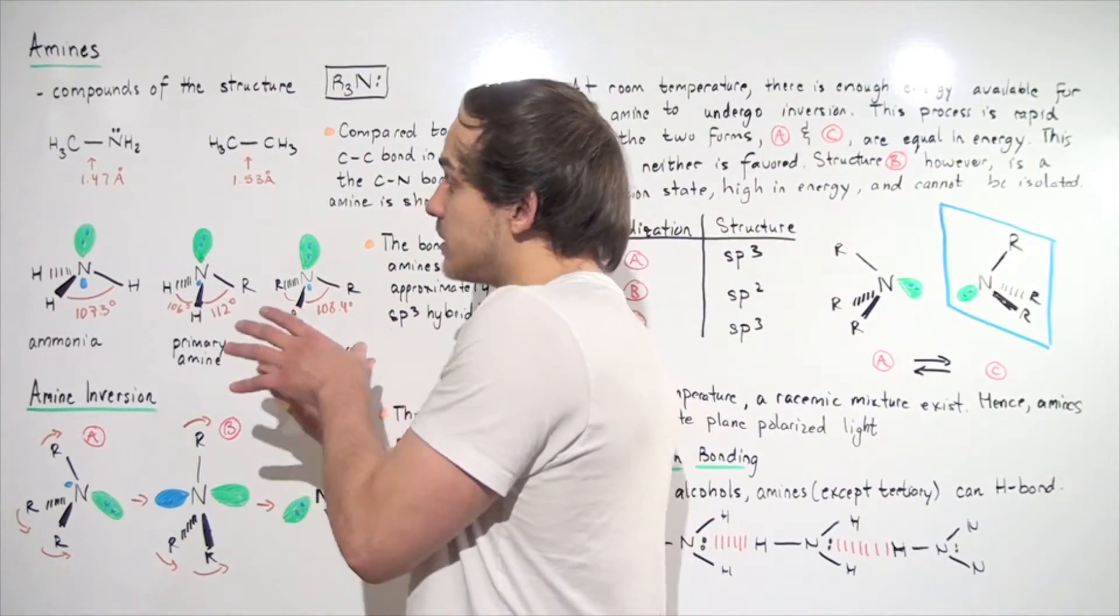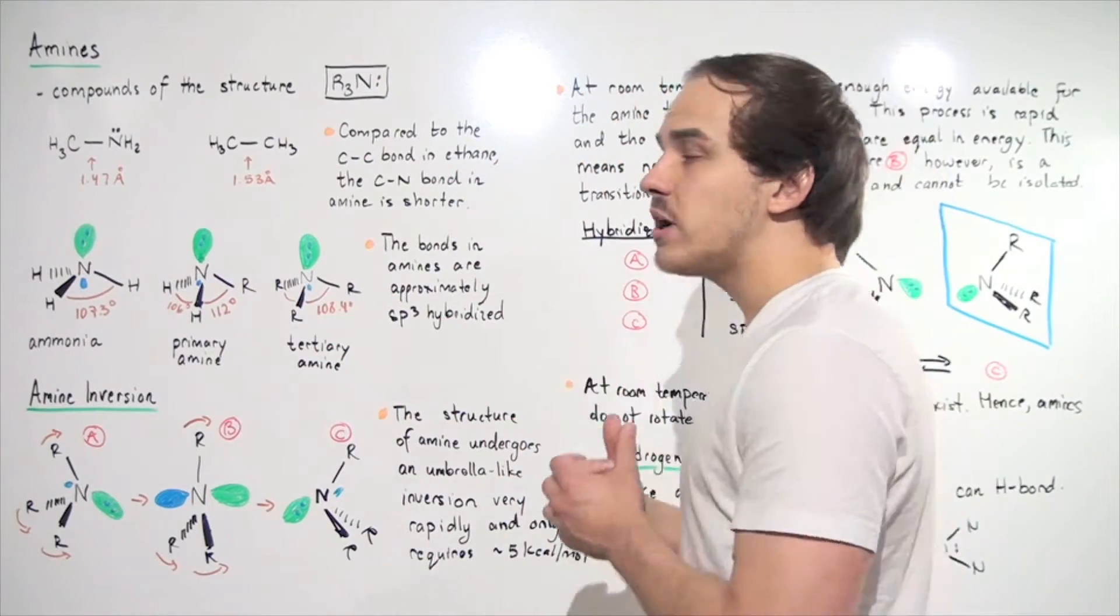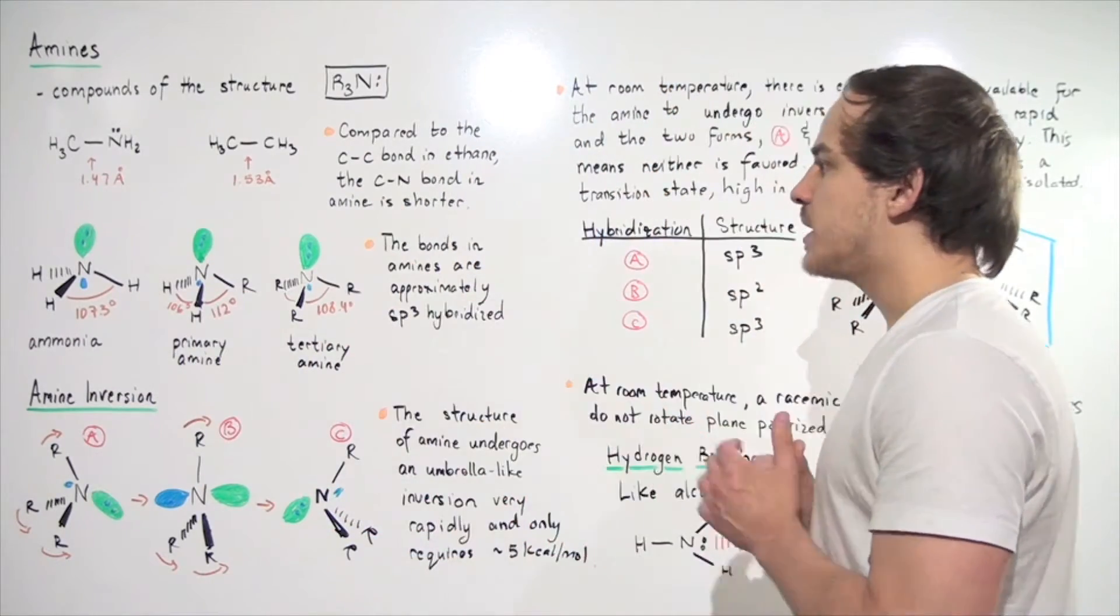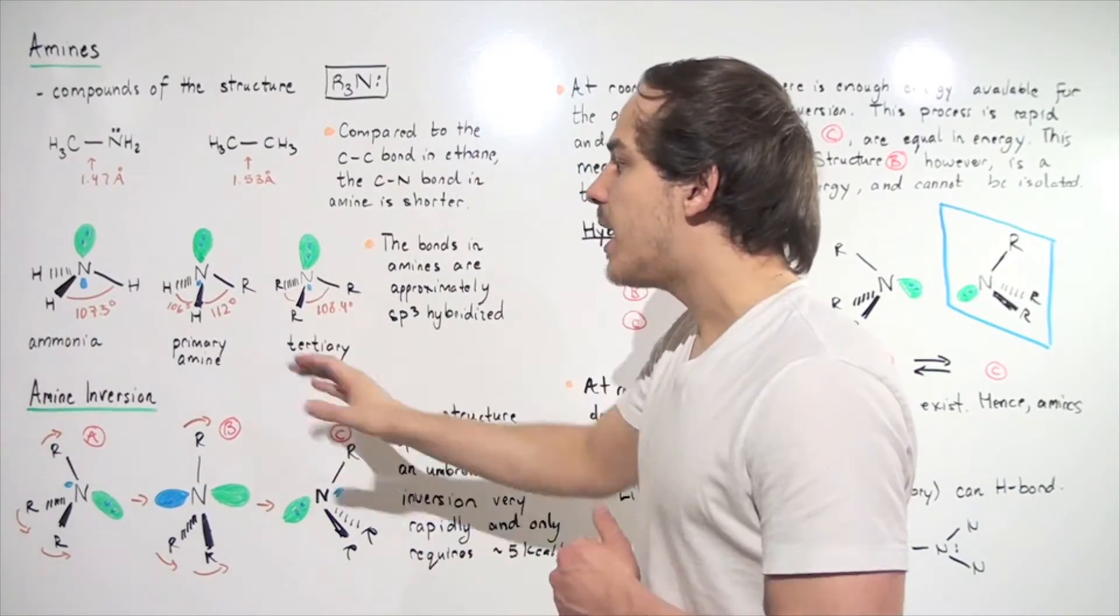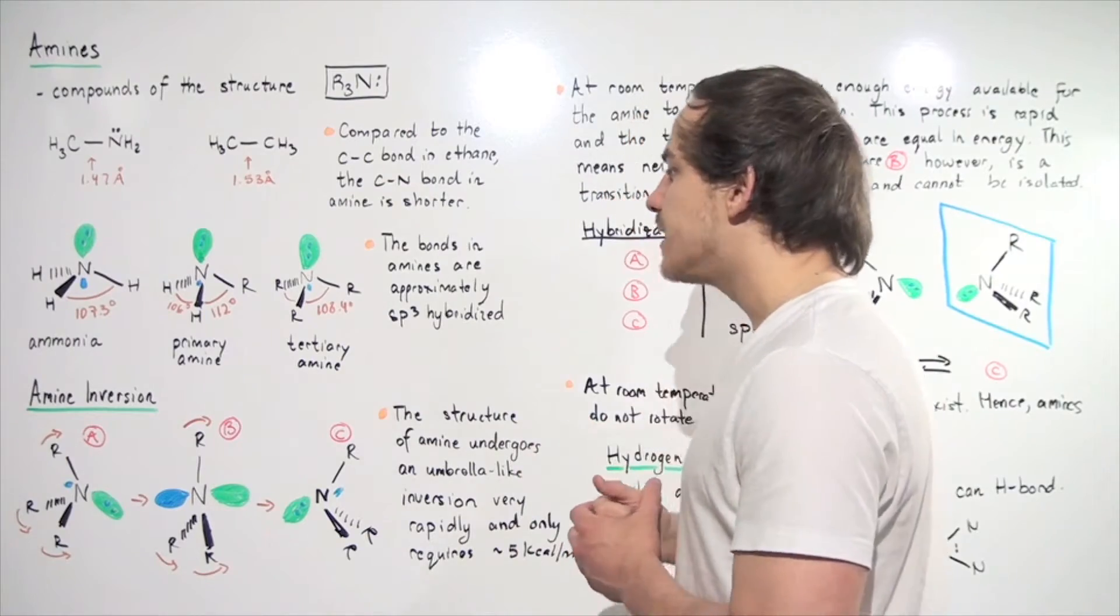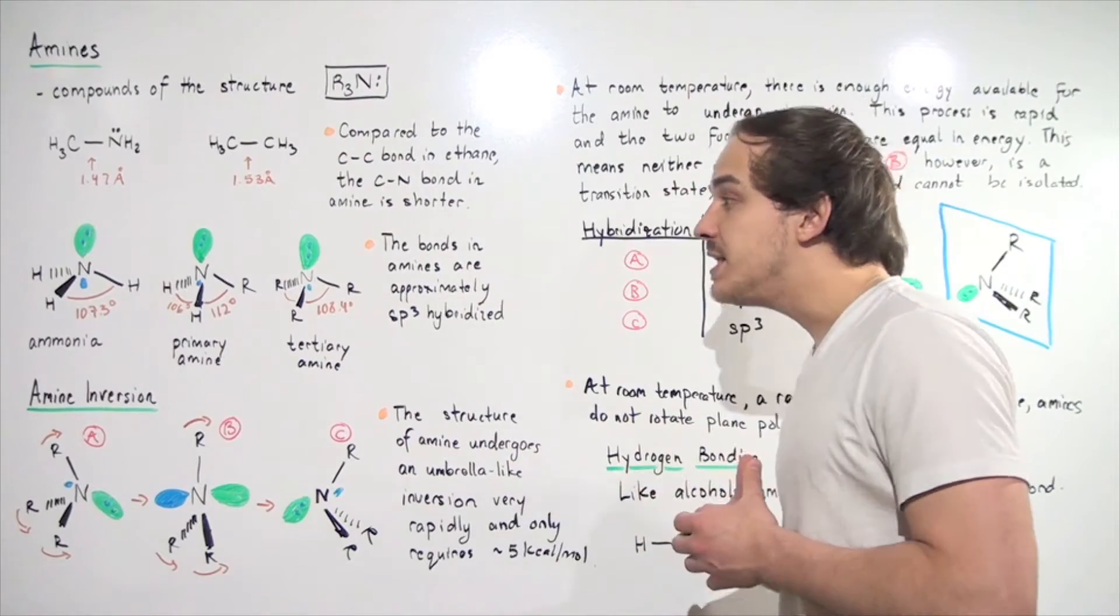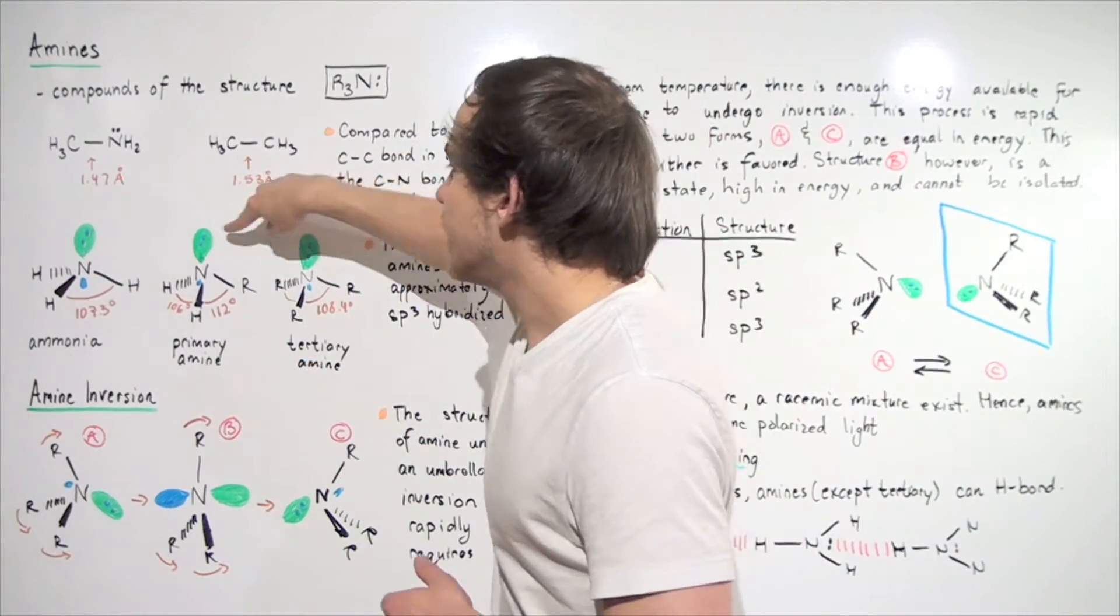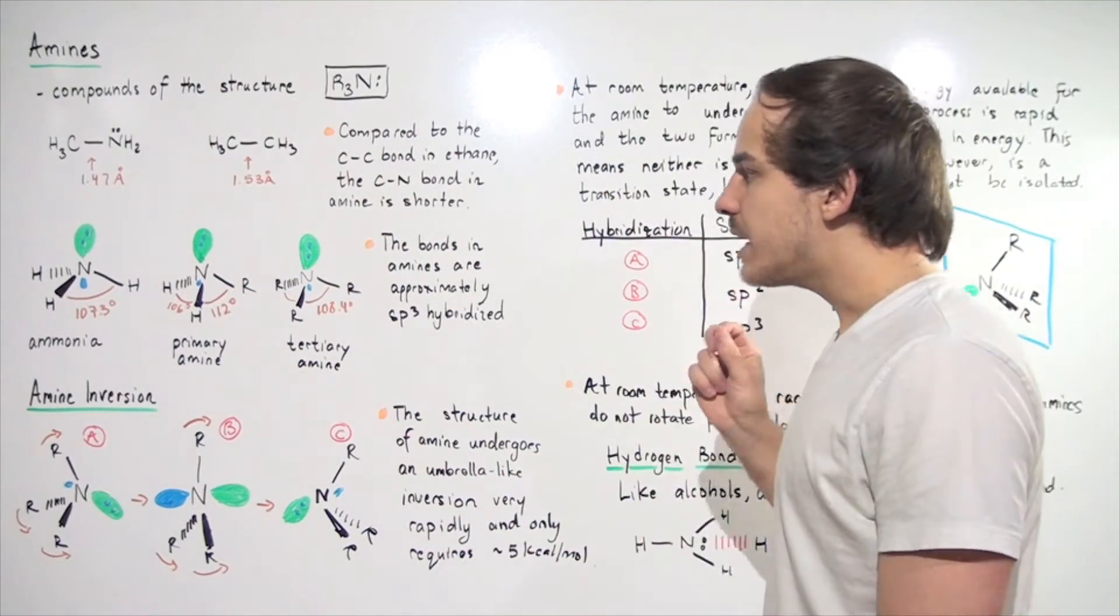Now let's observe or examine the atomic orbital diagram for our amines. Here we have ammonia, primary amine, and tertiary amine. Notice that all the bonds, and this includes the bonds in the secondary amines which aren't listed, are sp3 hybridized. That means we have 25% S character and 75% P character. All these bonds, including these non-bonding orbitals, are sp3 hybridized.